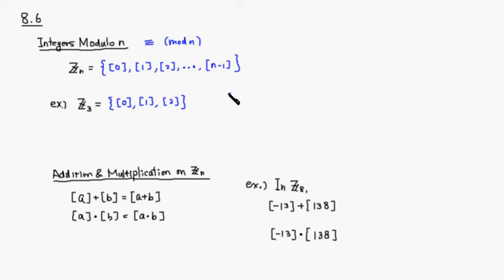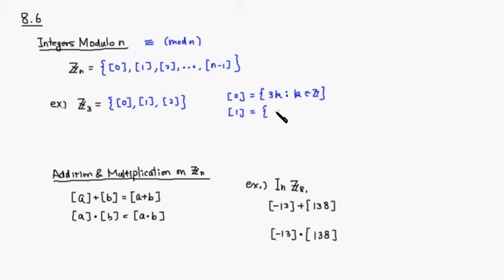The equivalence class represented by 0 is simply all multiples of 3, so 3k where k is any integer. The equivalence class represented by 1 is any number that when you divide by 3 you get remainder 1, so it's any integer of the form 3k plus 1, where k is any integer.